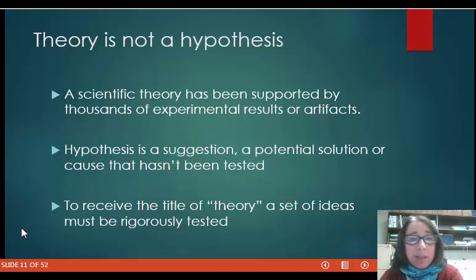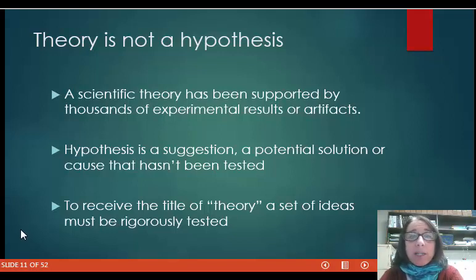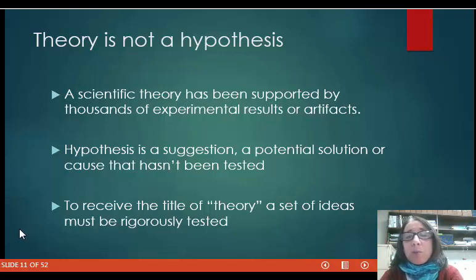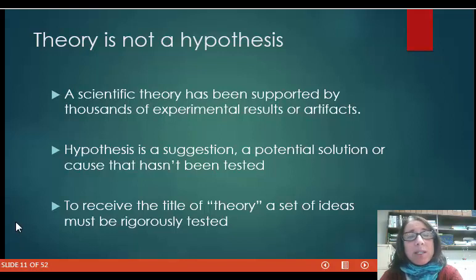In science, a theory is not completely testable, but to gain the title of theory, a set of ideas must meet very, very rigorous criteria. There must be thousands of experiments or pieces of data that support a theory. There are relatively few theories in science because the criteria is so rigorous.